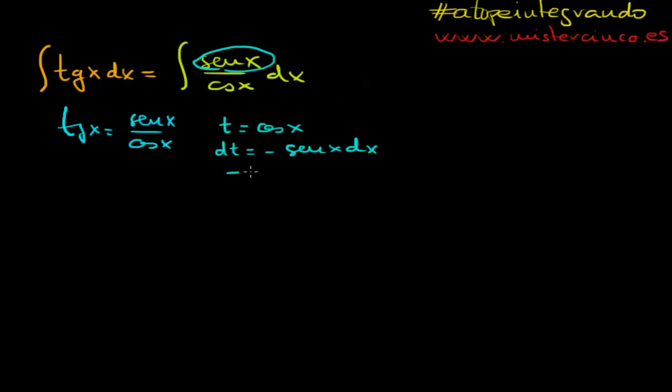And look at this, minus dt equals sin of x dx. But sin of x dx, you have here sin of x dx. So it's much easier now.